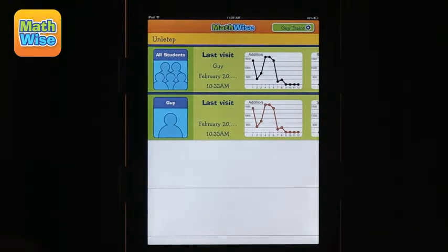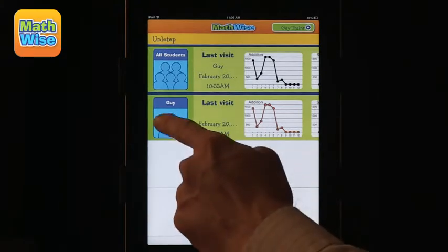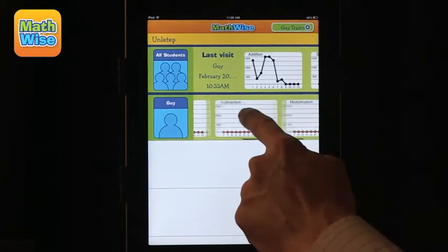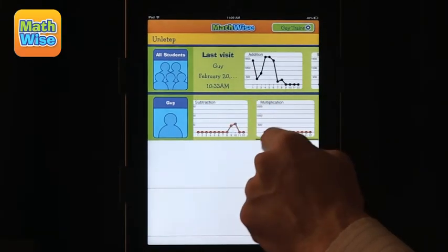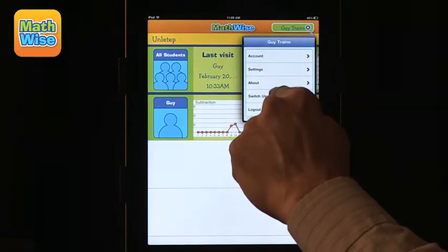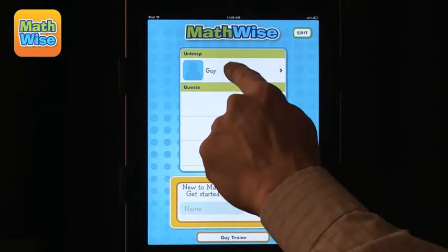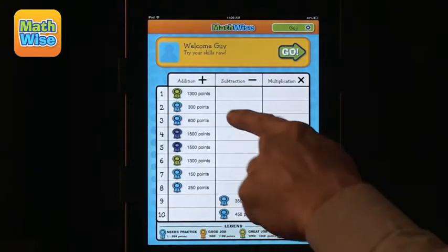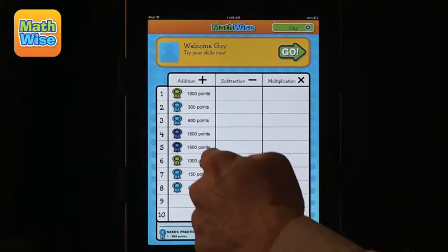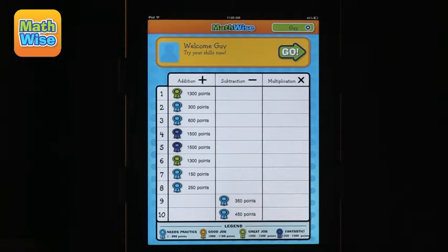And what you get is a score. The score is based on when the trial happened and how quickly students have answered correctly. So you can look at how a student has done in different operations, addition, subtraction, and multiplication. And if I log in now as a student, you can see that a student can see her own achievement. In this case, in addition and a little bit in subtraction there.